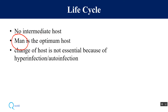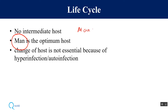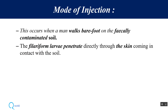Unlike other nematodes where host-to-host transmission is required for parasite survival, that is not necessary here, because this worm can cause auto-infection. Due to hyper-infection or auto-infection, it can survive within only one host. The infective form is the filariform larva, which penetrates the skin.